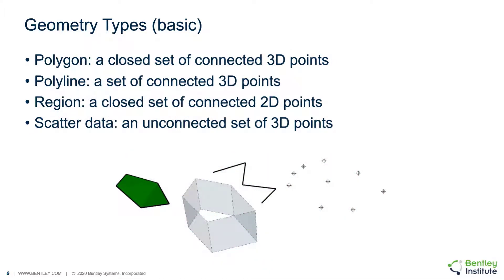Additional geometry types include polygons, which are a connected set of 3D points; polylines, which are a set of connected 3D points that don't enclose an area; regions, which are a closed set of connected 2D points with no Z coordinate. Regions act like cookie cutter objects that cut through all surfaces in a model. Scattered data can also be imported, which are a random set of unconnected 3D points.